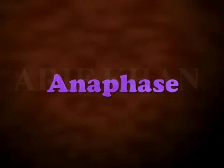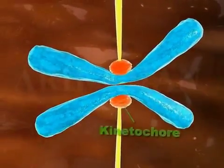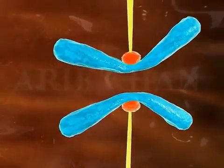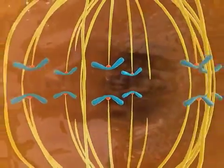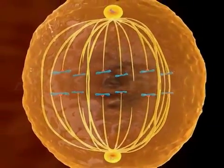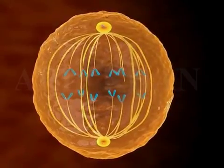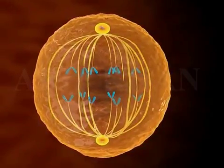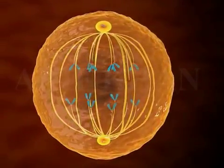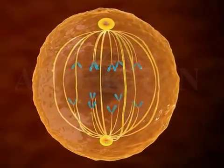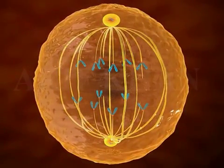Anaphase. During anaphase, the sister chromatids separate at the kinetochores and the daughter chromosomes along with the divided centromere move towards the opposite poles as the microtubules shorten. The poles of the spindle also move apart and help to separate the chromosomes. As the chromosomes separate completely into two sets, one at each pole, anaphase is considered complete.